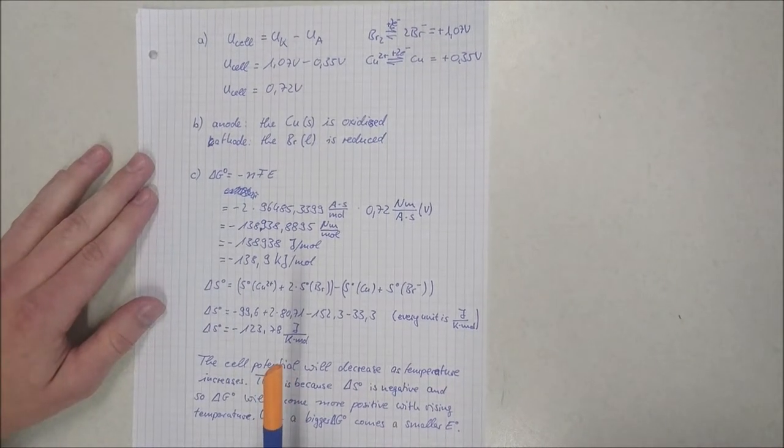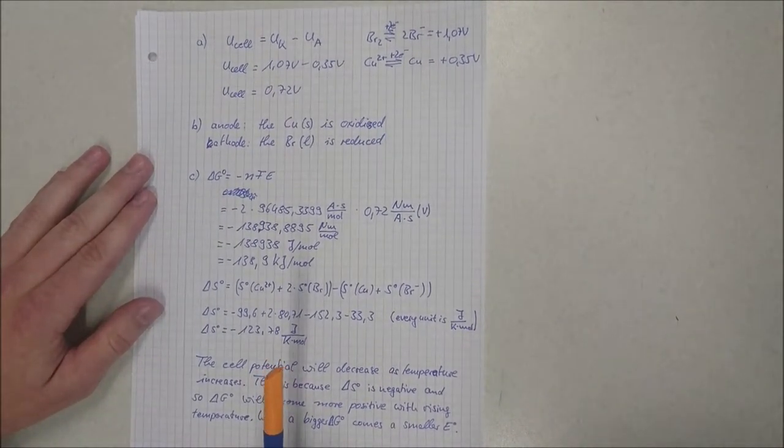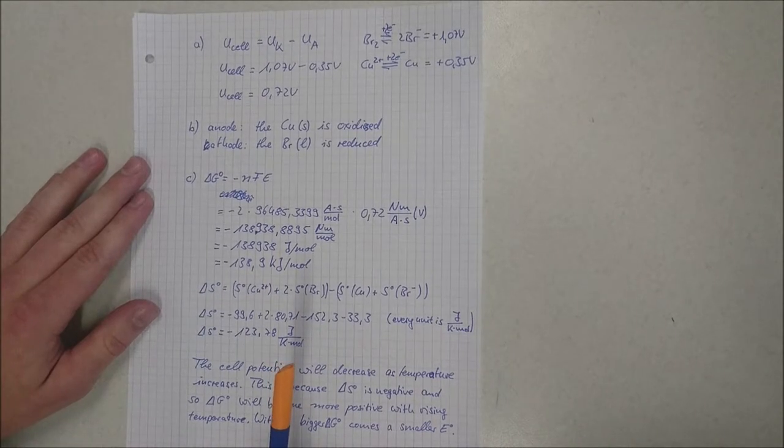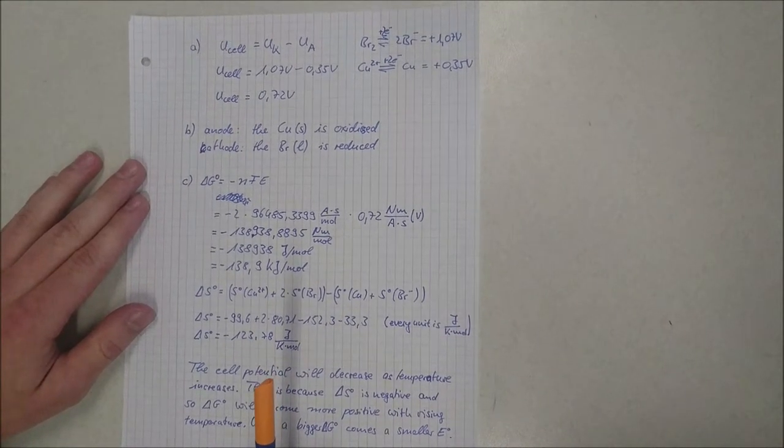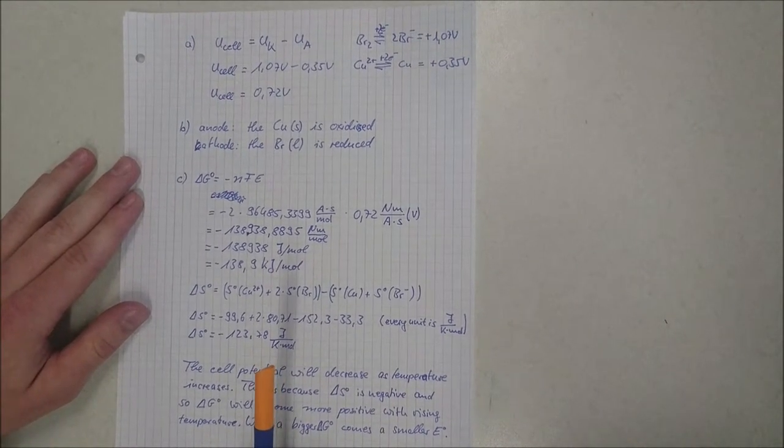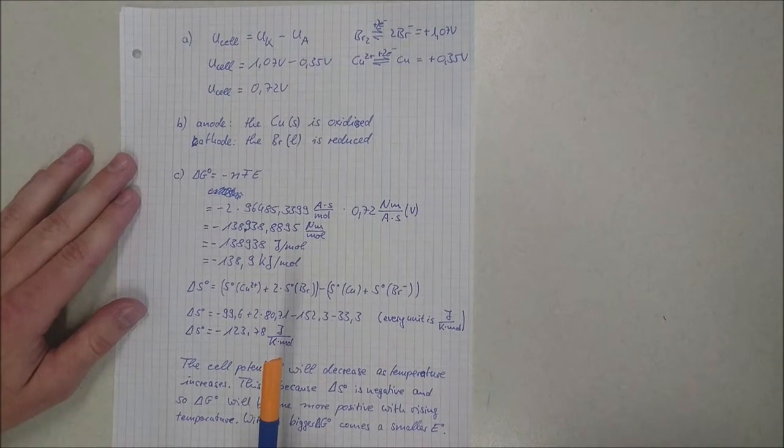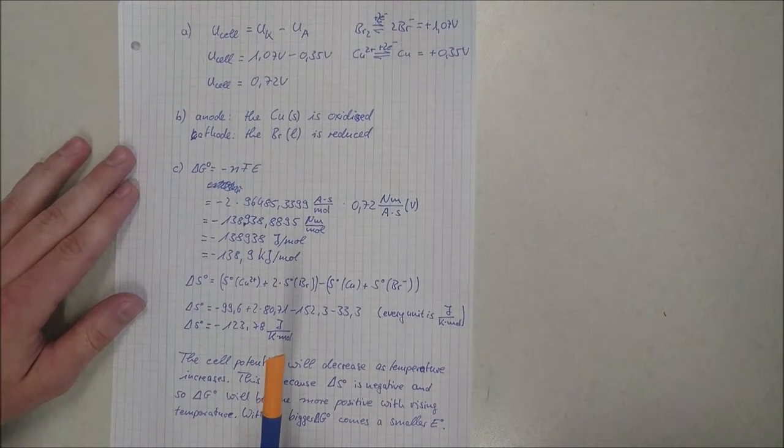There is a voltaic cell based on copper ions and copper, and bromine and bromide ions. The first task is to find the standard EMF of the cell.